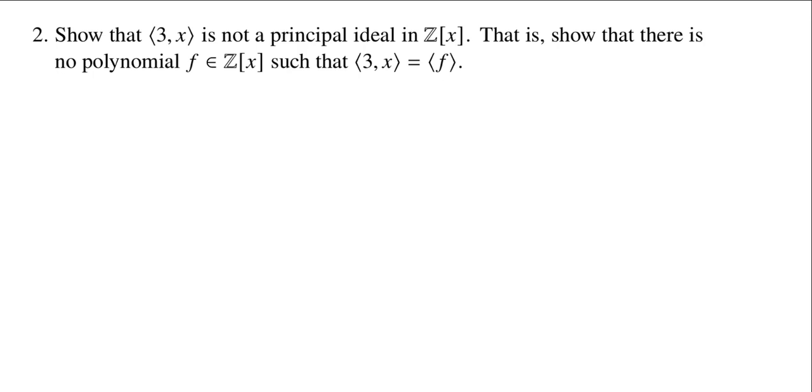In this problem, we are asked to show that if we look at the ideal generated by 3 and x, that this is not a principal ideal in the ring of polynomials over the integers. So to be not a principal ideal means we cannot find a single element in ℤ[x] that will generate this ideal. So there's no polynomial f such that the ideal generated by 3 and x is the same as the ideal generated by f.